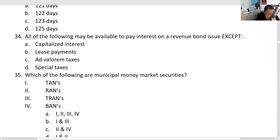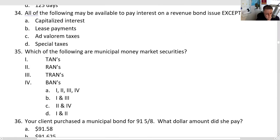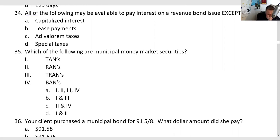All the following on a revenue bond are used except — we don't use ad valorem taxes (property taxes) for revenue bonds; those are for GO bonds. The answer is C. Money market securities are high-quality debt maturing in less than 12 months. Corporate notes and Treasury notes are two to ten years, but muni notes are less than one year — so these are money market securities found in tax-free money market funds: tax anticipation notes (TANs), revenue anticipation notes (RANs), tax and revenue anticipation notes (TRANs), and bond anticipation notes (BANs).